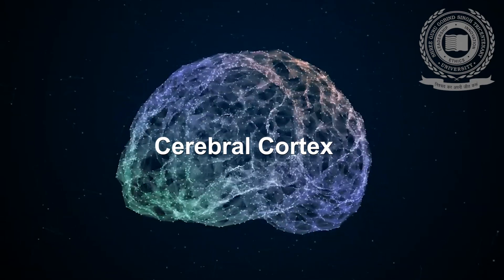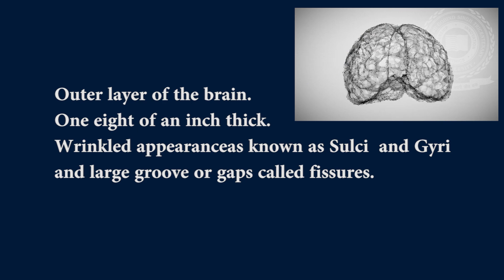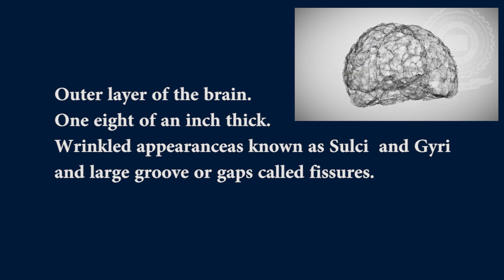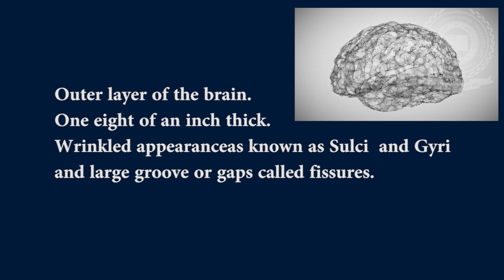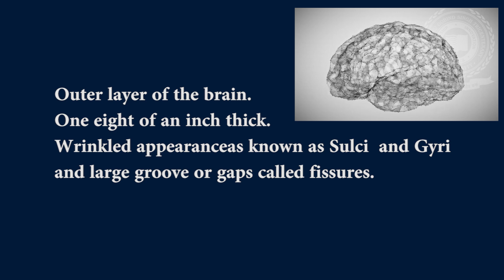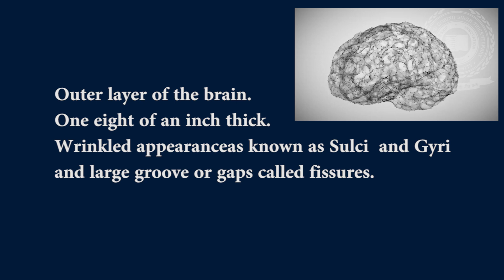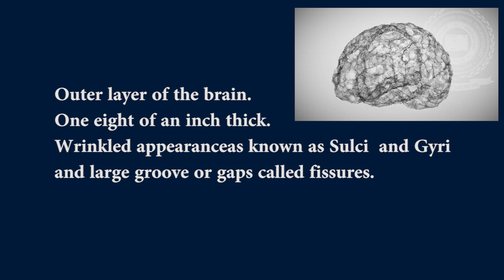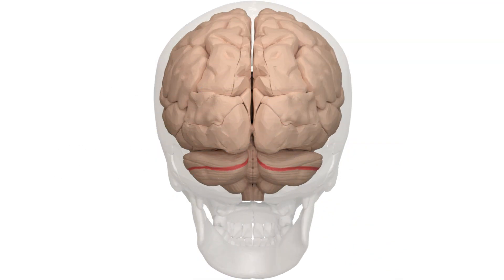Cerebral cortex is the outer layer of the brain. It is also referred to as grey matter due to the predominance of cell bodies. The cerebral cortex is only about one-eighth of an inch thick, and it has a wrinkled appearance. This wrinkled appearance of the cerebral cortex is known as sulci and gyri.